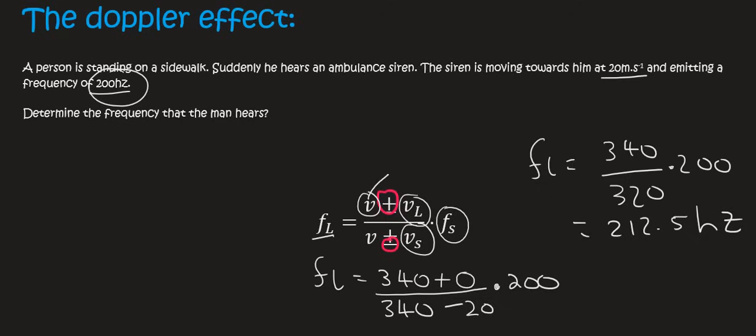Every second there are 200 cycles coming out of the ambulance siren. But because the ambulance is traveling towards the man, those waves are being compressed. So the man will hear slightly more waves per second, and the frequency is slightly higher.